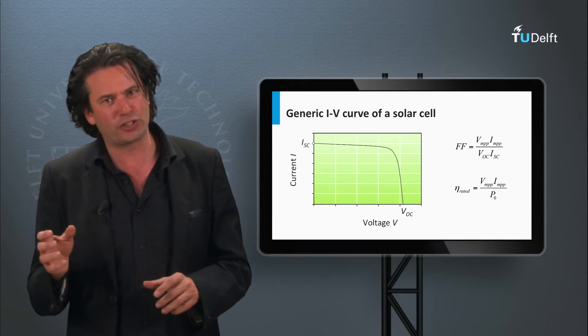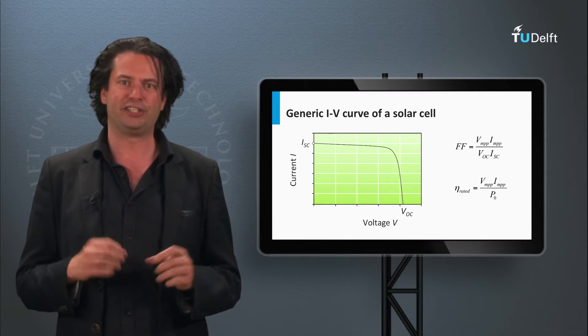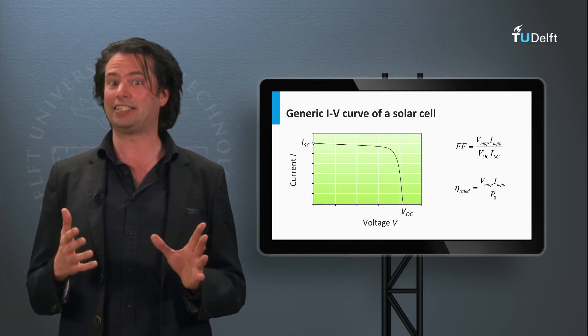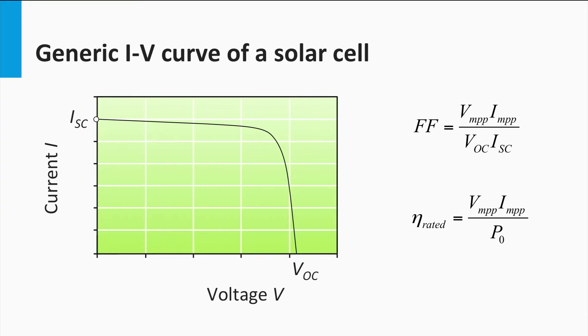So far we have been discussing the JV curve at the solar cell level, J being the current density, current per unit area. But at the module level, the total current that the module can generate is of more interest. Hence, we look at an IV curve or the current voltage curve. As the area is a constant, the IV and JV curve of the solar cell or solar module will have identical nature.